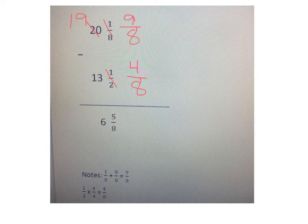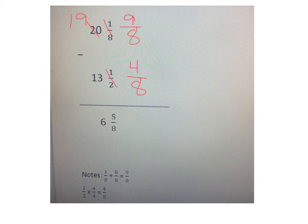And then I can't take 1 eighth minus 4 eighths, so I cross out the 20 and make it a 19 and borrow from it, and make the 1 eighth a 9 eighths. And in my notes at the bottom, I show that when I cross out the 20 and make it a 19, it's like borrowing 1 from it, or when we're talking about eighths, 1 is actually 8 eighths. So I take 1 eighths plus 8 eighths equals 9 eighths.